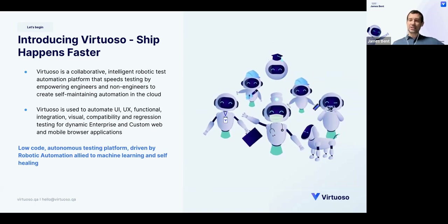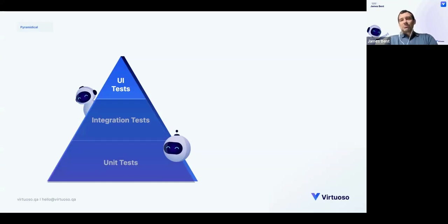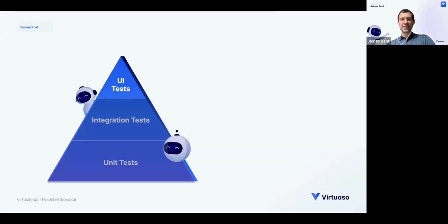A great place to start is by thinking of the testing pyramid. The pyramid consists of UI tests at the top, integration tests in the middle, and unit tests at the bottom. The testing pyramid is kind of an ideal state, and the different sizes of the segments represent how much testing should occur at each layer — lots of unit testing, slightly less at integration, and the fewest at the UI test level. It also shows the sequence: unit testing first, then integration tests, followed by UI tests.